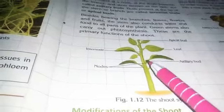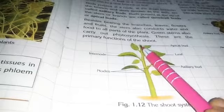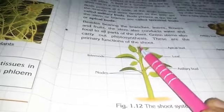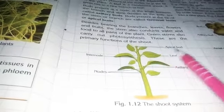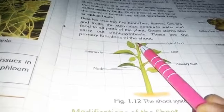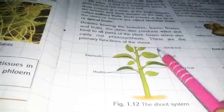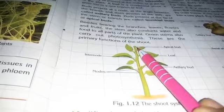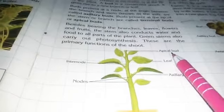Buds may also be present at the apex — at the tip of the stem or branch. If buds are present at the tip of the stem or branch, they are called apical buds. They are also called terminal buds because they are present at one terminal end of the stem.